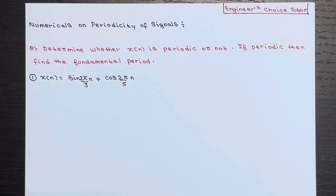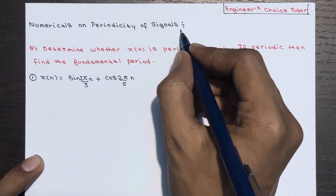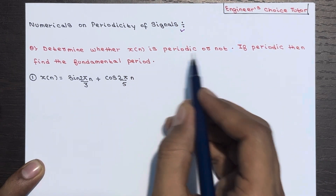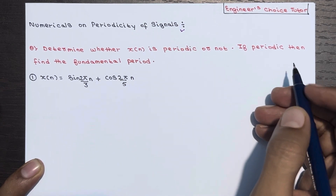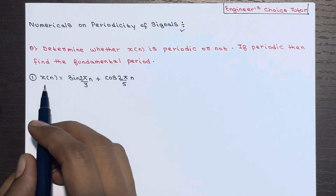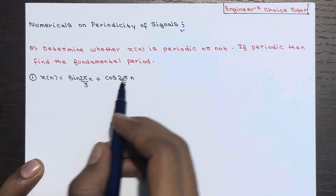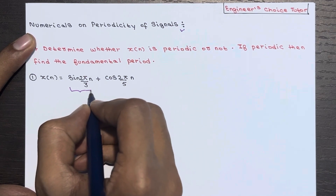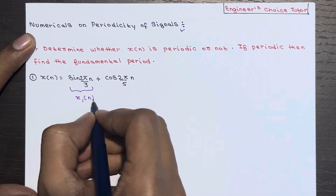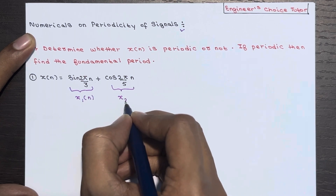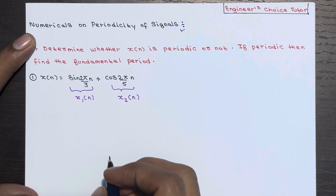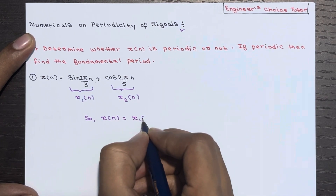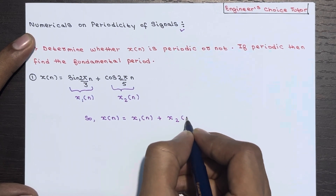Hi everyone, in today's lecture we are going to see numericals on periodicity of signals. The question is: determine whether x(n) is periodic or not, and if periodic, find the fundamental period. x(n) = sin(2π/3 · n) + cos(2π/5 · n). I am considering the first term as x1(n) and the second as x2(n), so x(n) = x1(n) + x2(n).